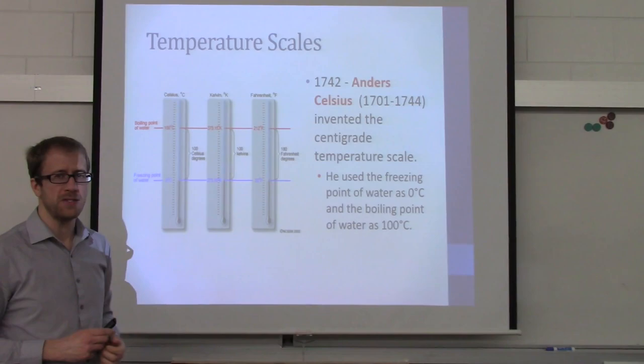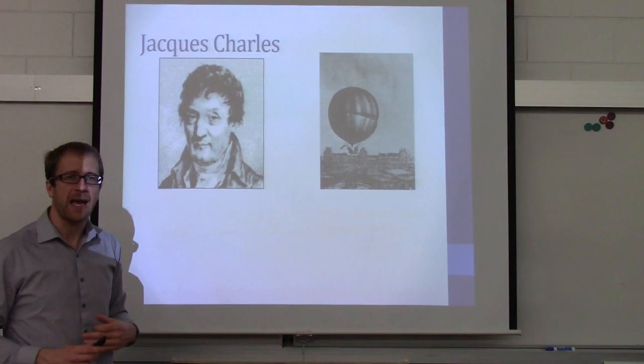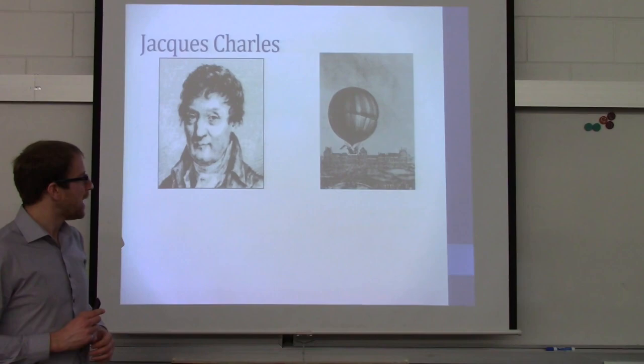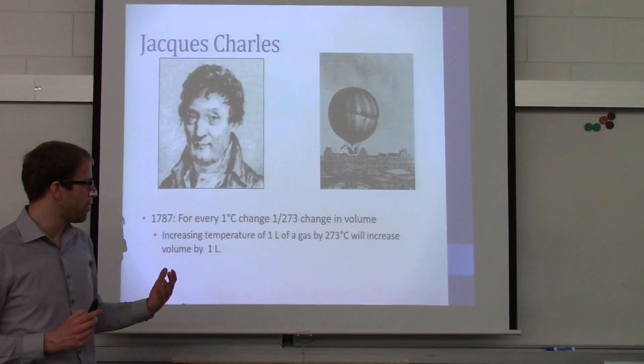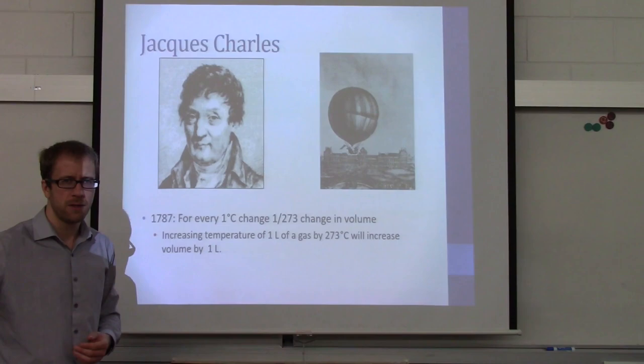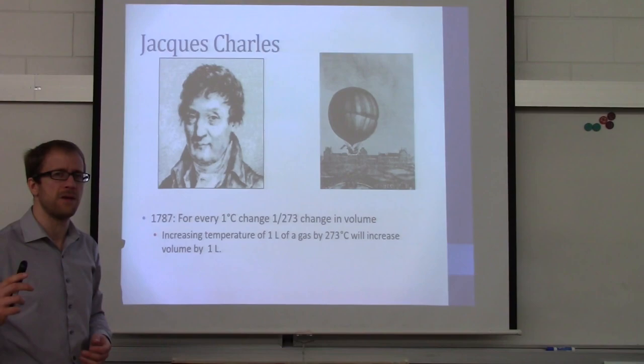So enter Jacques Charles. Jacques Charles liked to fly weather balloons and take atmospheric readings — things like temperature, pressure, and so on. He noted that as he saw a temperature change of 1 degree Celsius, the volume of his balloon changed by 1/273. That number 273 — where have we seen that? That's the Kelvin offset, and that number is going to be important right away.